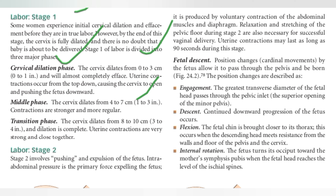In the middle phase, contractions are strong and more regular. Then comes the transitional phase, where the cervix dilates from eight to ten centimeters, or three to four inches. Dilation is complete and uterine contractions are very strong and close together.